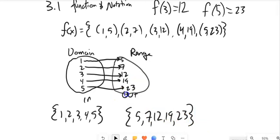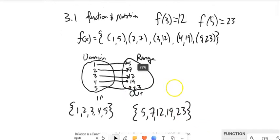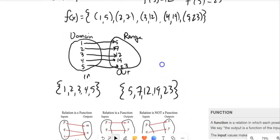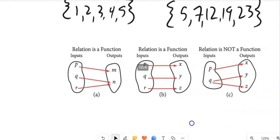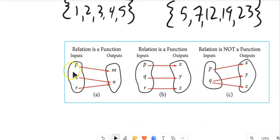Now this idea of mapping one thing onto another, that helps me think about what is a function. So if you just look at these pictures right here, this relation is a function. These are inputs and these are outputs. P goes to M, Q goes to N, R also goes to N. But that's still a function. This is a function. P goes to X, Q goes to Y, R goes to Z.